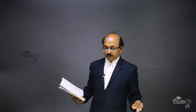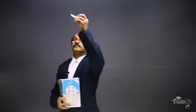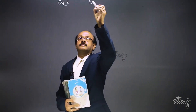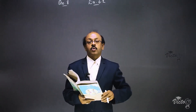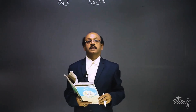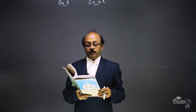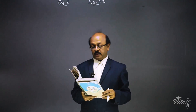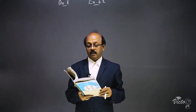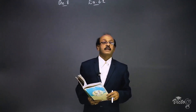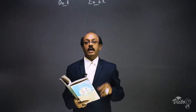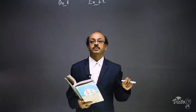Next is question number 8 from exercise 6.2. The question uses the converse of the Basic Proportionality Theorem (Converse of BPT). We have to prove that the line segment joining the midpoints of any two sides of a triangle is parallel to the third side.